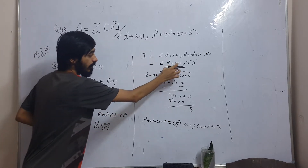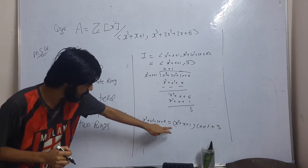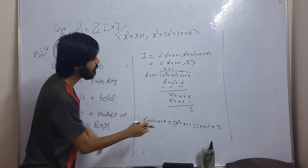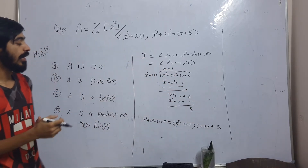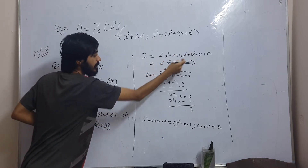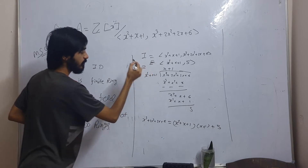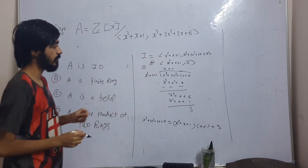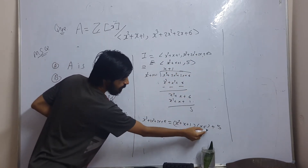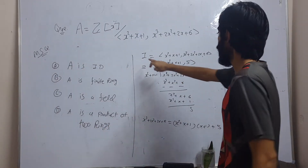It is clear that x² + x + 1 is inside I. Since x² + x + 1 is in I, multiplying by (x + 1) is also in I. Subtracting from x³ + 2x² + 2x + 6 shows that 5 is also inside I. For the other direction, since x² + x + 1 is already inside this ideal, and 5 is also inside, the two ideals are equal.